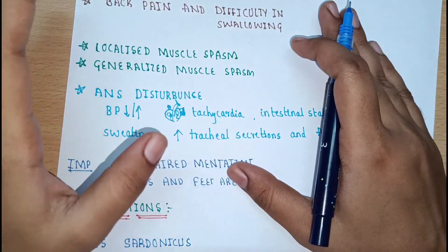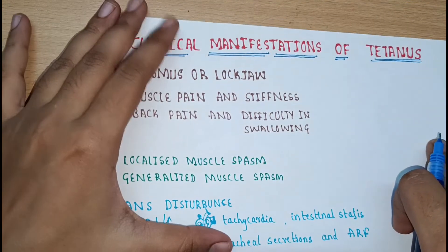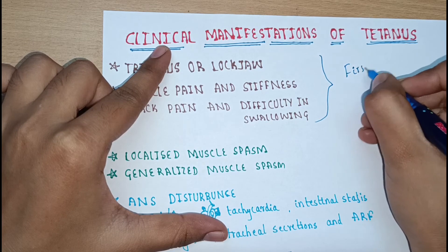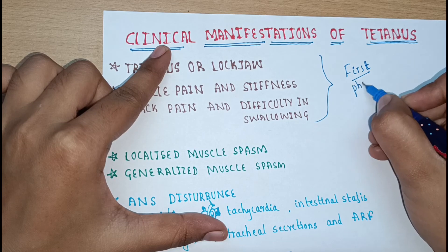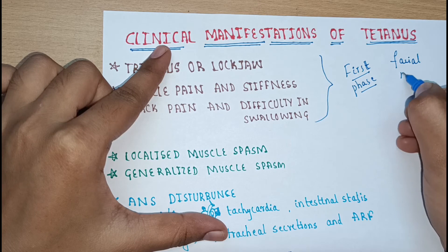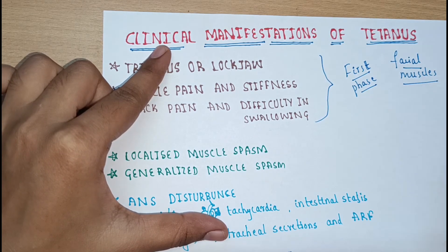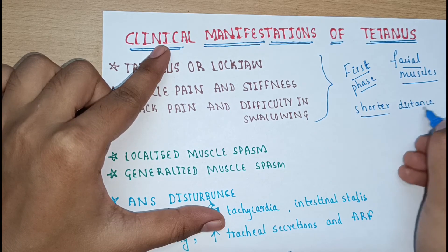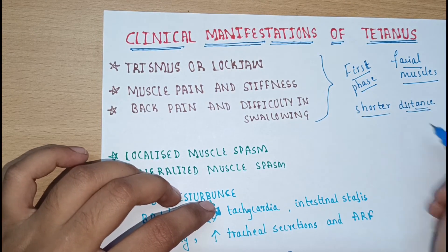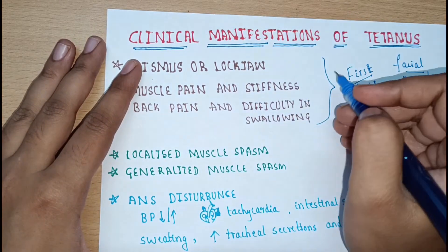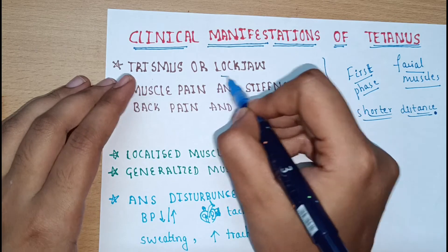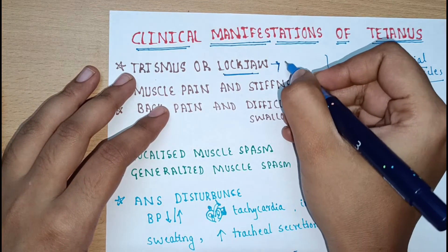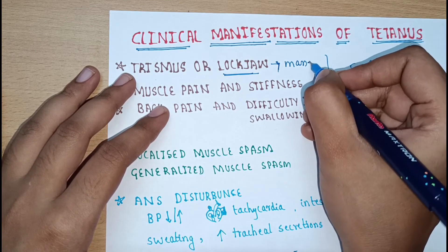During the initial first phase of tetanus, the facial muscles get affected first. The facial muscles and jaw are affected first because of the shorter distance — the toxin can reach the face and jaw muscles easily. That is why the first features of this disease are trismus, or lockjaw. Trismus is characterized by a grinning appearance due to increased masseter tone, which leads to a rigid smile appearance.